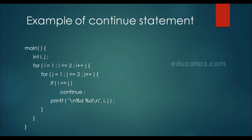In this example we have nesting of a for loop. We check that if i and j are the same, we do not want the numbers to be displayed, so we execute continue — it will go back to the next iteration of the same loop. We get the output of i and j, but whenever they become the same, that output will not be printed. Continue makes the control go to the start of the next iteration, skipping any statements after continue.